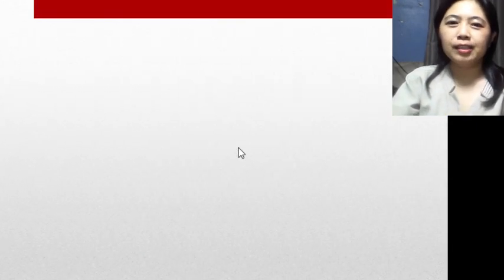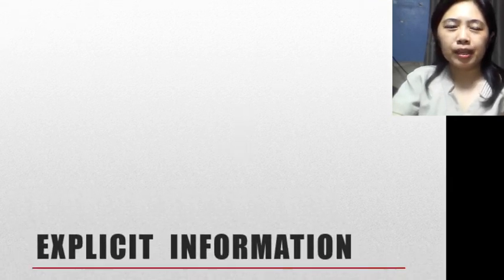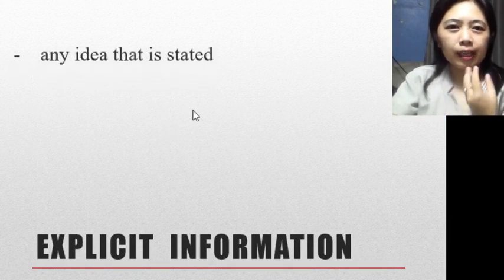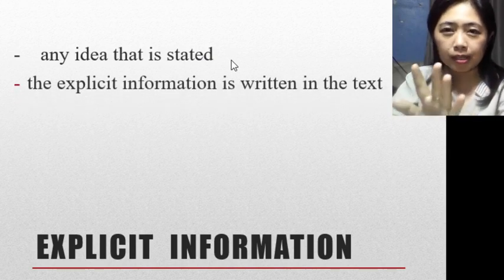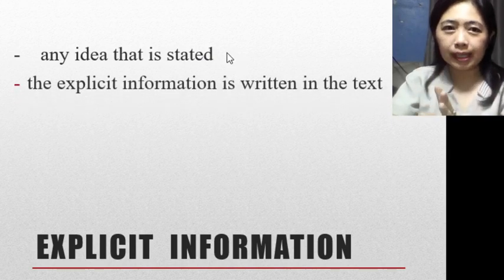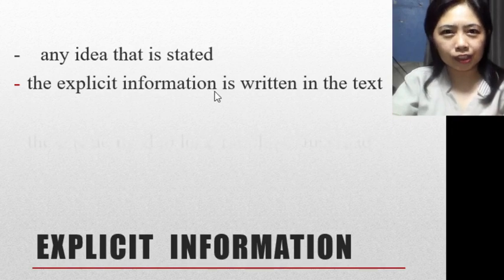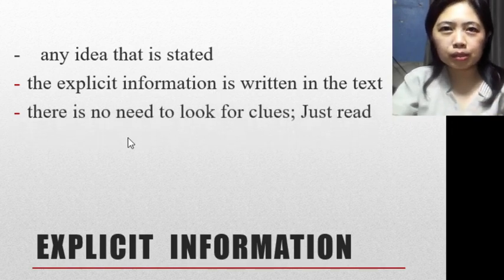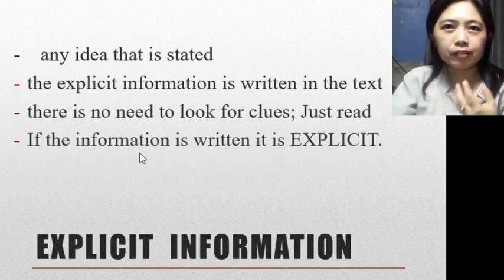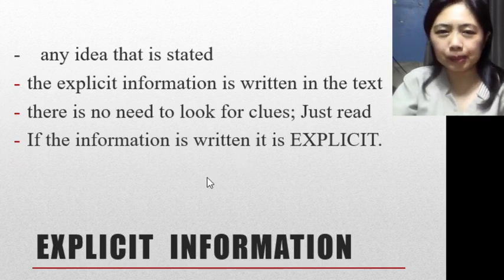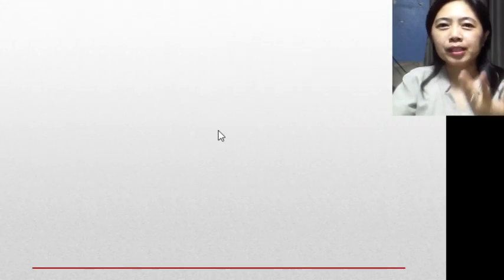Now, let's discuss explicit information. Explicit information is any idea that is directly stated — it is given and can be seen right in the text. The explicit information is written in the text. There is no need to look for clues because it's just there; you just have to read it. If the information is written, then it is explicit.